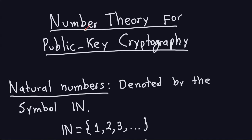Number theory is just the study of the integers, and the elementary part of number theory. So what we're going to do here, maybe in the next videos, is discuss the basic properties that we need for public key cryptography — all of them come from this number theory part, which is part of mathematics. So let's start with some definitions.